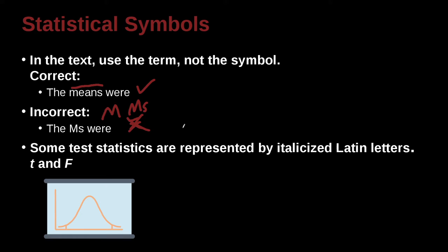Some statistics are represented by italicized Latin letters, so you need to pay attention to that. In the APA manual, they have a guideline for all of those. So the T for the T test, the F for the F test, rather than the straight letters. You use the italicized letters, which is the angled letters like that. The regular straight is wrong. Straight is wrong, italicized is correct.